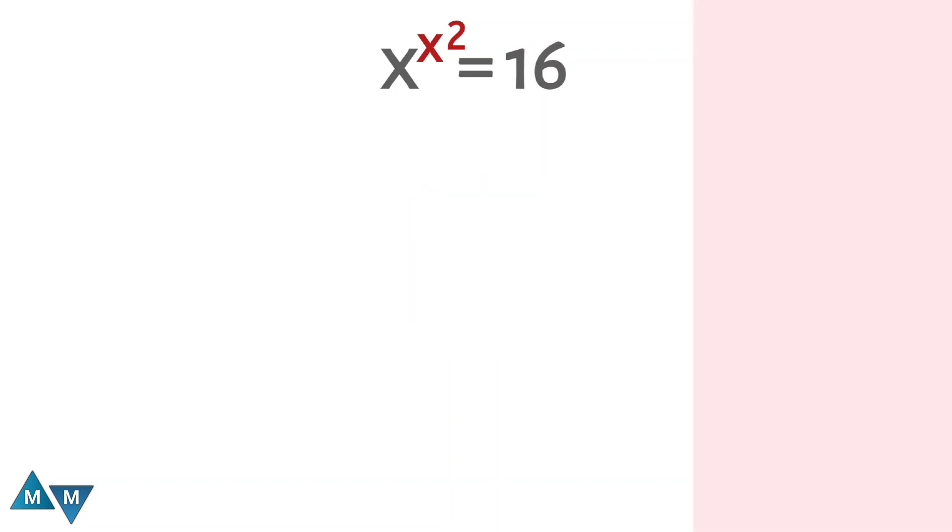So in these types of problems, we need to adjust the exponents by multiplying the exponents with 2 both sides. We get x power x to the power 2 into 2 equals 16 to the power 2.